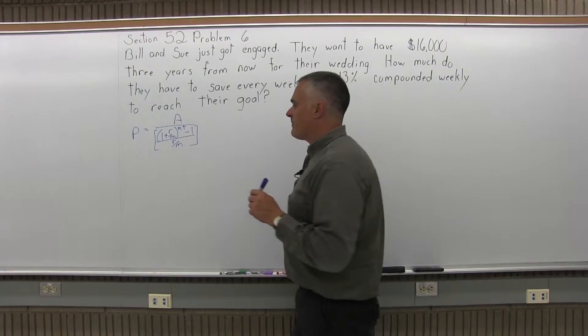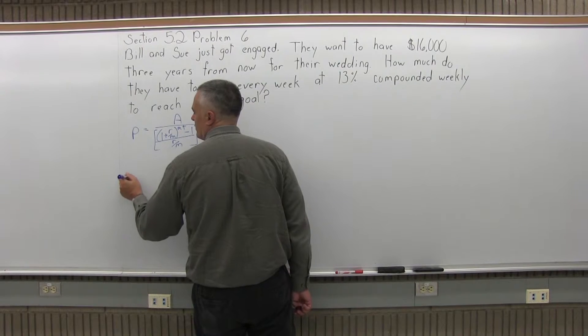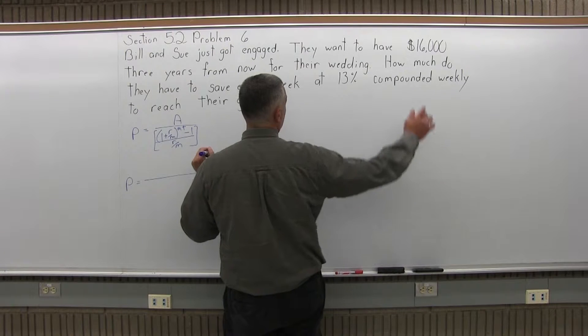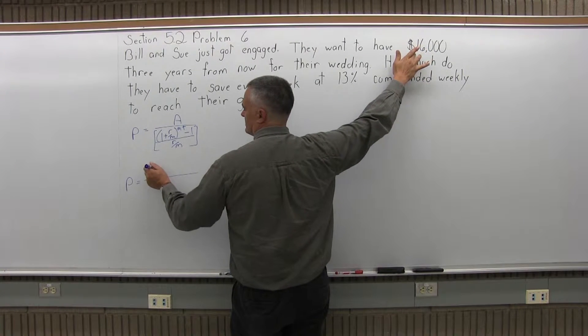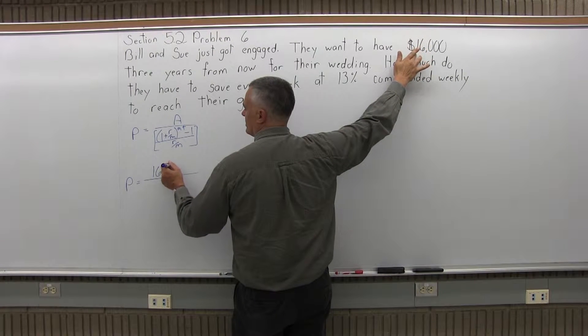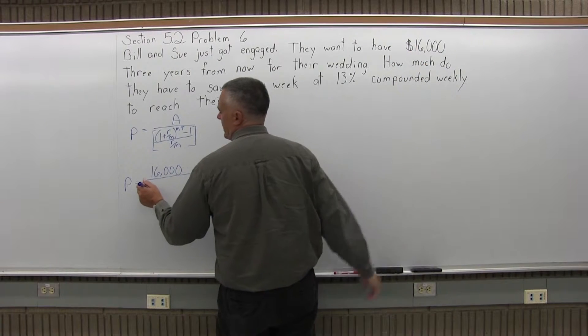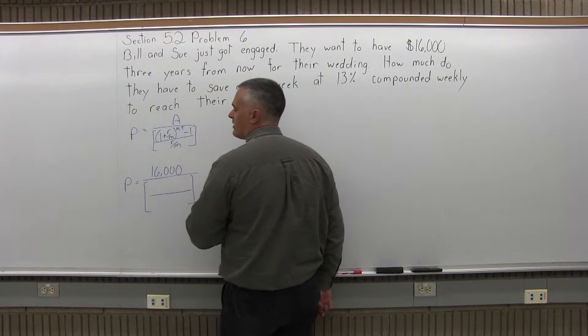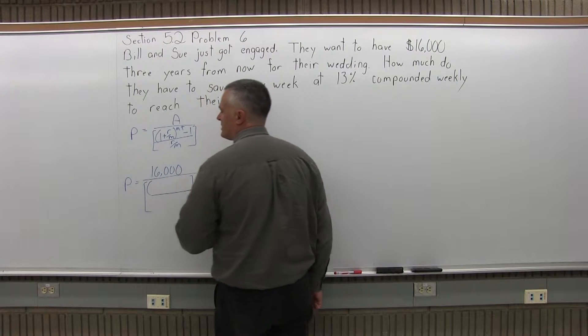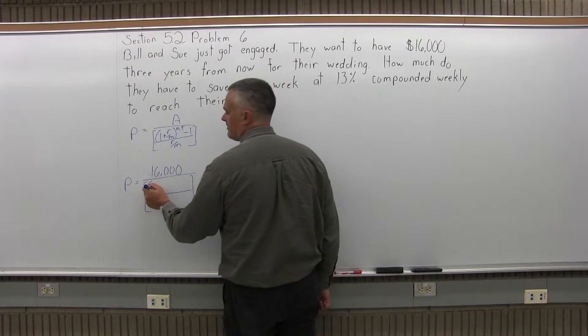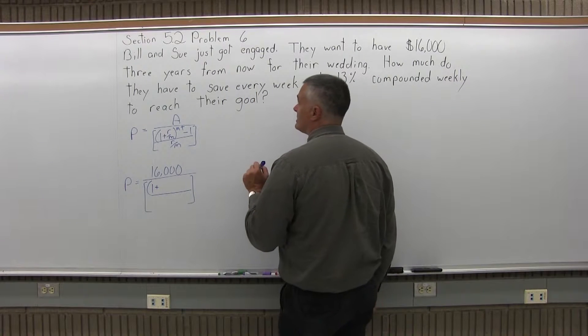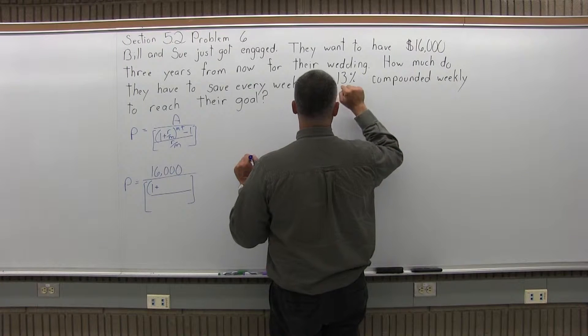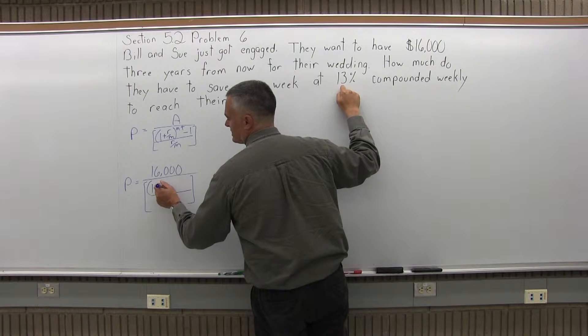That's what we'll fill in. So when we fill the formula in, we have P equals the A on the top of the formula is the final amount, which is $16,000. That's the goal that you want to get to. Now underneath the $16,000 you have some brackets with a numerator and a denominator, and in the numerator you have in parentheses 1 plus R over M. The R is the rate as a decimal. So the rate is 13%, so as a decimal that's 0.13.